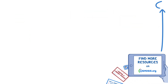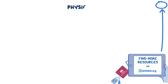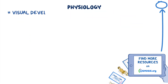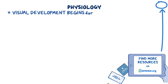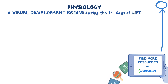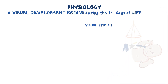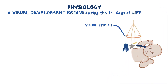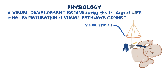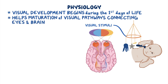Let's quickly review the physiology of vision. Visual development begins during the first days of life, when the newborn starts receiving visual stimuli from the external world. This helps maturation of the visual pathways connecting the eyes and brain until they reach maturity at about 4 years of age.